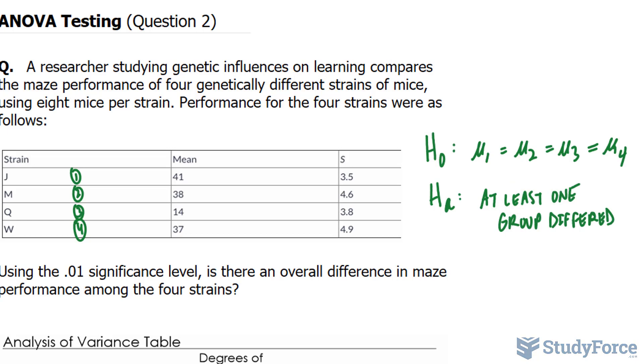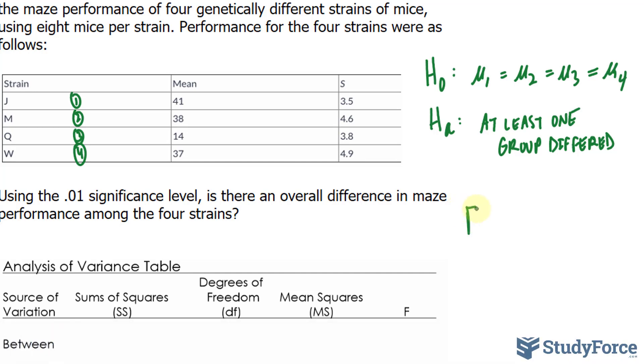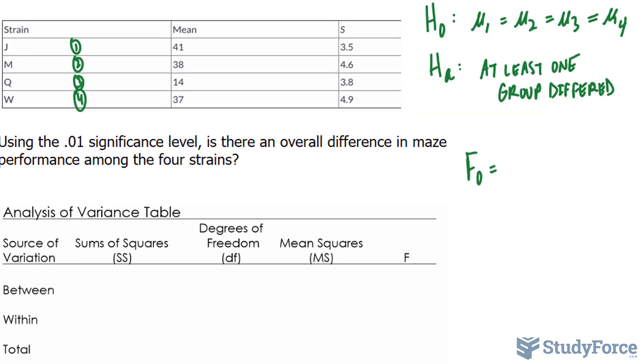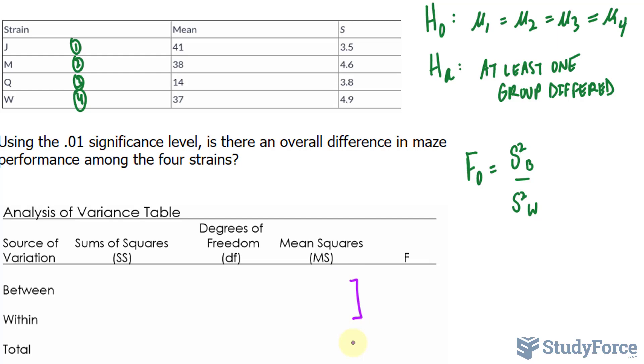The next step in the process that we learned in question number one was to pick a test, and we'll be using the F test. Therefore we need to find out what F observed is, and that can be found by taking the mean square value for between the groups and dividing it by the mean square value of within. And we denote that using s squared b over s squared w. And in case you're curious, that's this part of the ANOVA table, which we'll construct in step three.